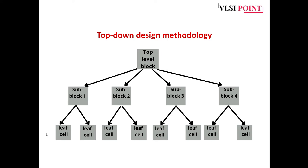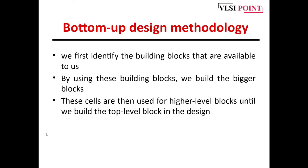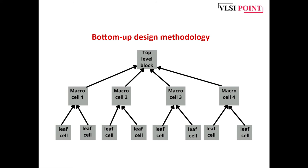In the bottom-up design methodology, we first identify the building blocks that are available to us and then combine these building blocks to build a bigger block. These cells are then used for higher-level blocks until we build the top-level block. As you can see in this figure, the leaf cells available to us are combined to make macros, and these macros again combine to form the top-level block. The flow is from bottom to top — that's why it is called the bottom-up design methodology. We start from the smallest possible block and move towards the top-level block.